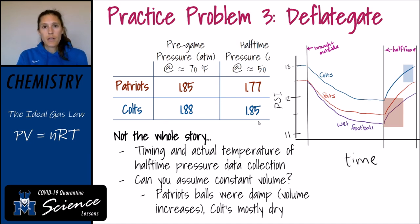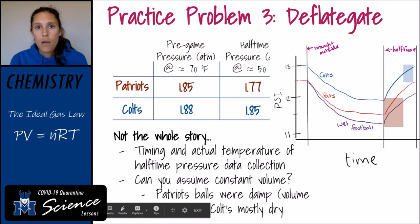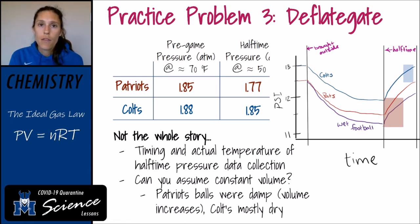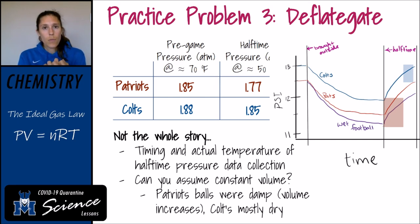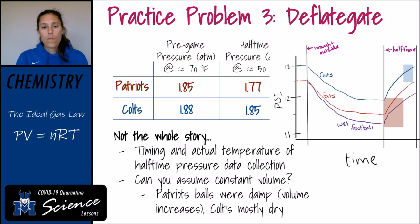The other assumption to examine is that volume stayed constant. It's been noted that the Patriots had been on offense right before halftime, so their footballs were quite a bit wetter than the Colts'. A damp football can increase the volume of the football by about three percent. If volume increases, then from Boyle's law, pressure will go down — so the wet football assumption of constant volume actually would work in the Patriots' favor, predicting an even lower pressure.